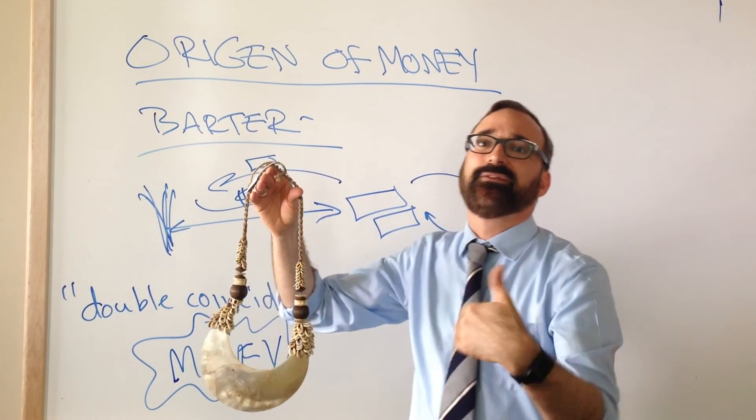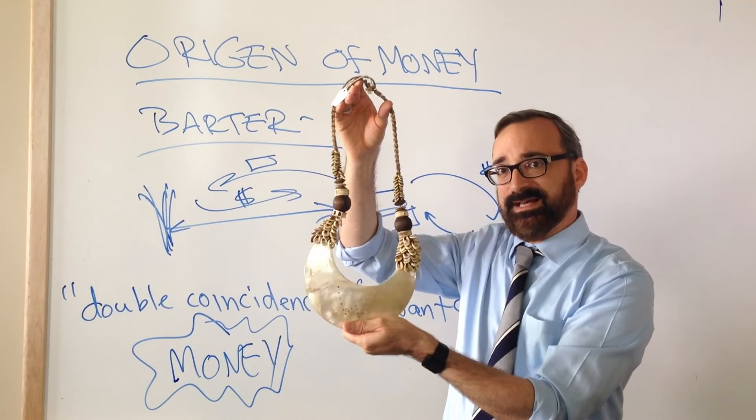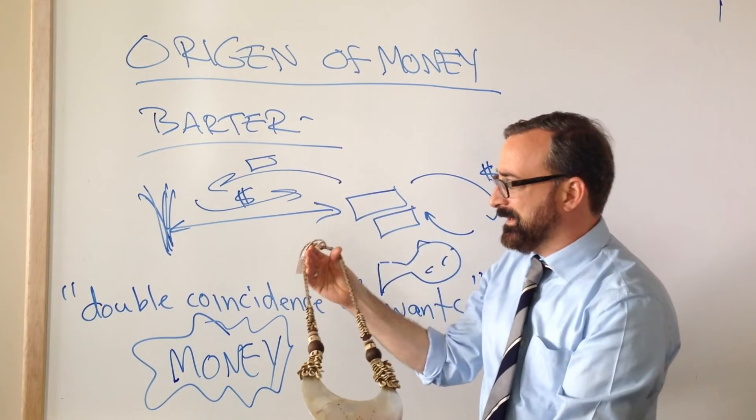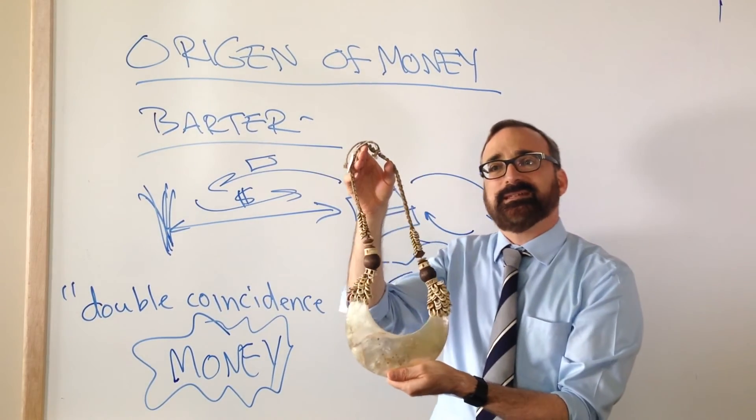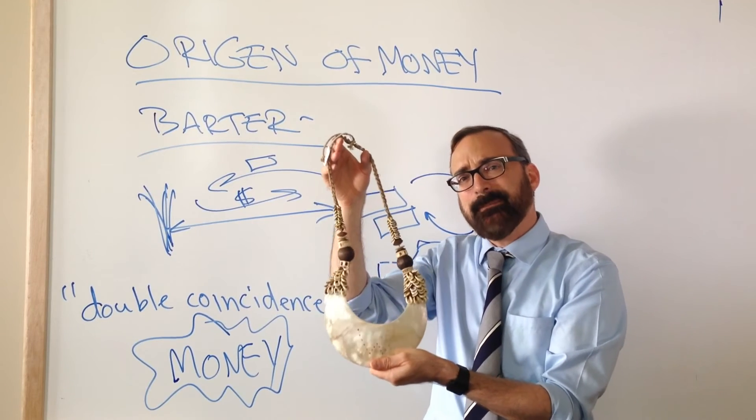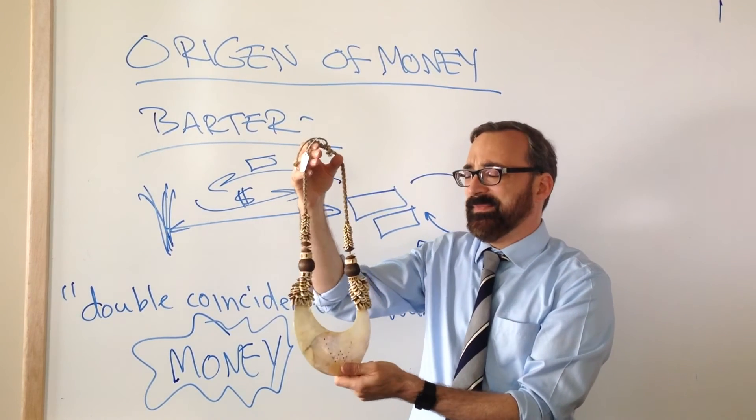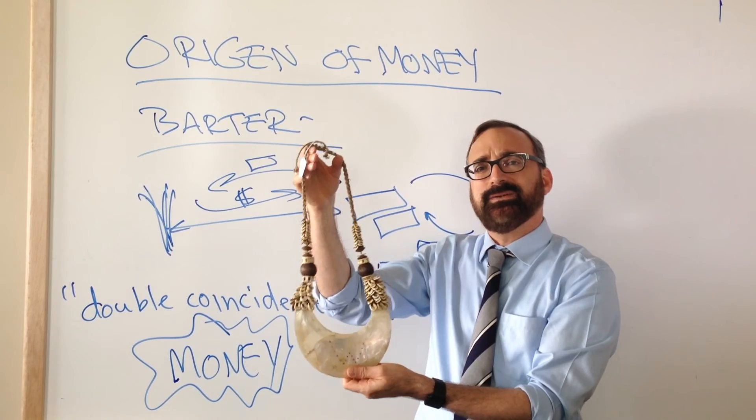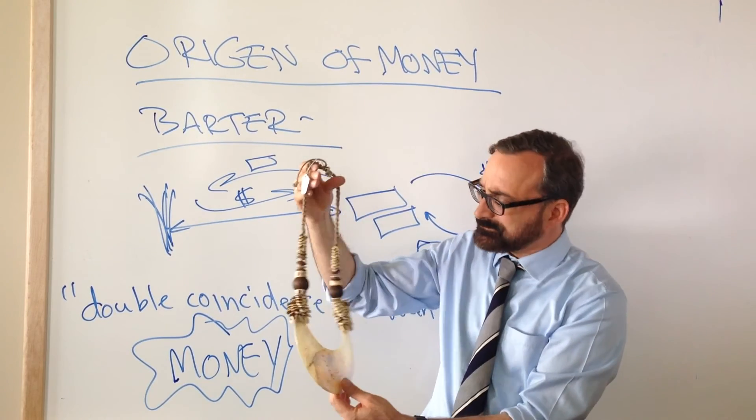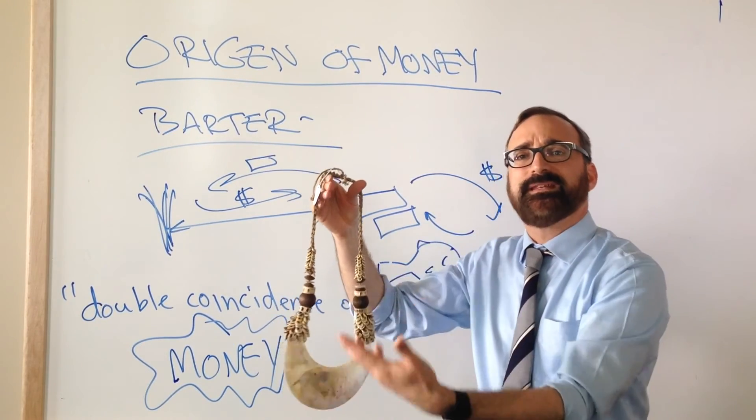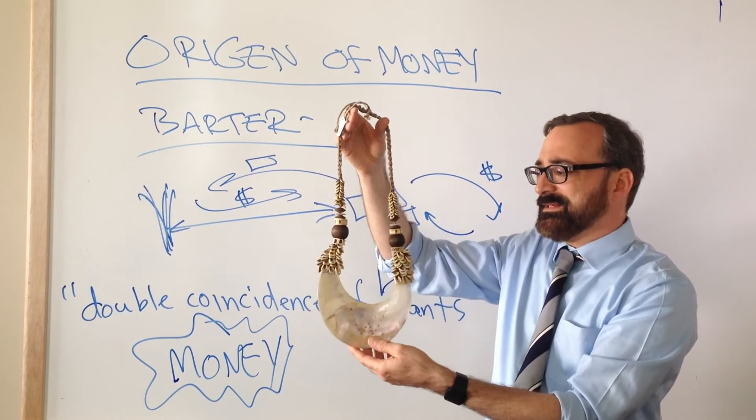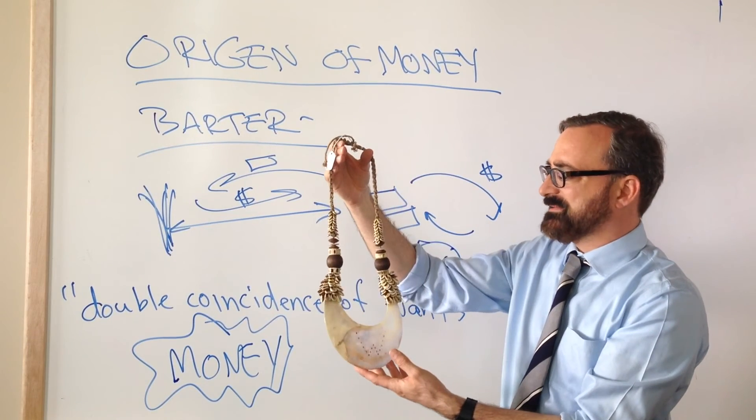So early anthropologists seeing this were like, you know, this is kind of like a money object. It itself isn't really being used in exchange, but it's kind of symbolizing all of the exchanges between kin. So that's one of the kinds of things that we saw.